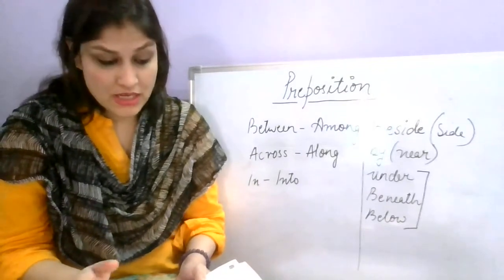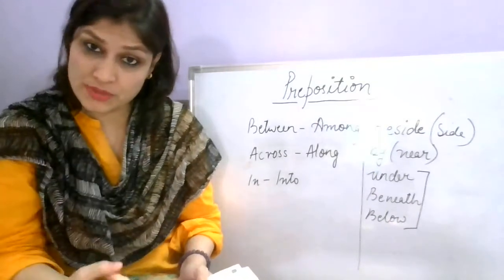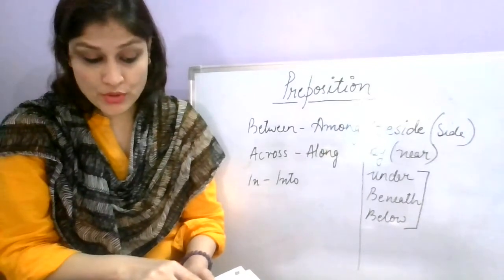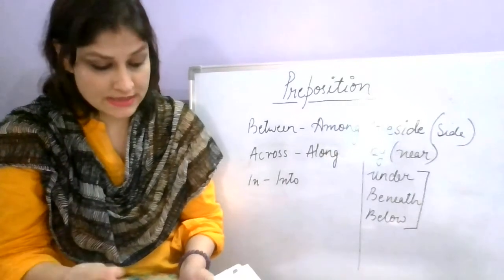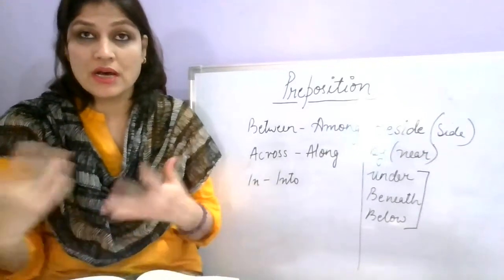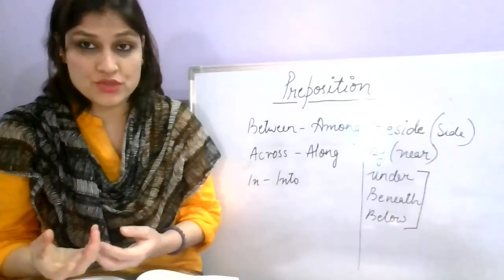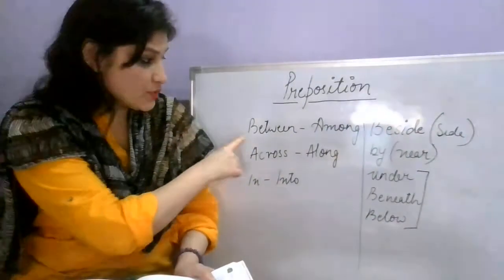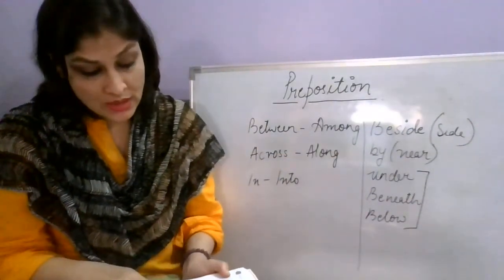Between and among: 'between' is used when talking about two people, and 'among' is used for more than two. For example, 'Both the boys shared the chocolates between them' — both means two boys. 'The men started quarreling among themselves' — here there could be three or four men. So between is for two people and among is for more than two.